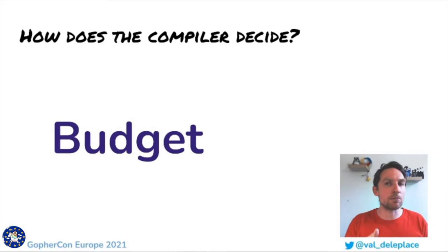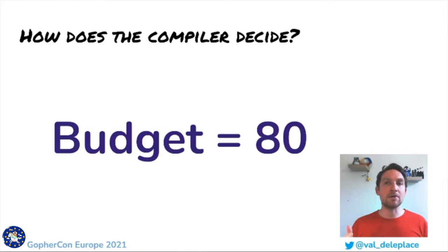This score is compared to the inlining budget per function, which is 80. In practice, it's a pretty low budget which allows only really small functions to be inlined.